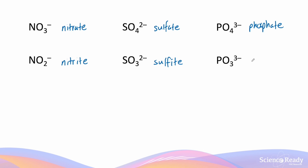PO3 3- is called phosphite ion. With these examples, hopefully you can see a pattern: the polyatomic ion that has more oxygens always has the suffix -ATE. You have nitrate, sulfate, and phosphate. The number of oxygens in each ion differs — nitrate has three, while sulfate and phosphate each have four — but the rule stays the same: the ion ending in -ATE always has more oxygens than its counterpart ending in -ITE.